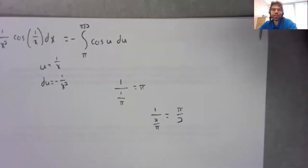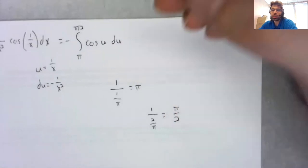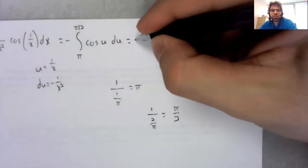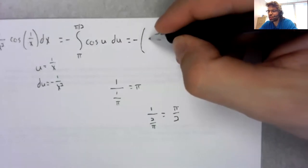And it's fine that the lower limit is bigger than the upper limit. That doesn't change anything. The antiderivative of the cosine—